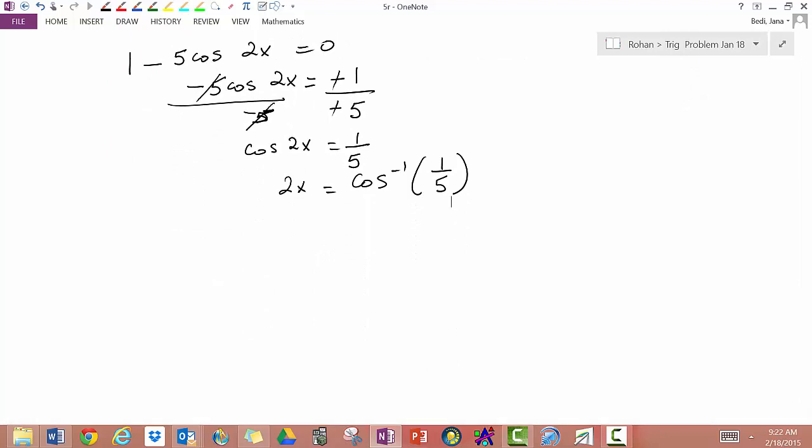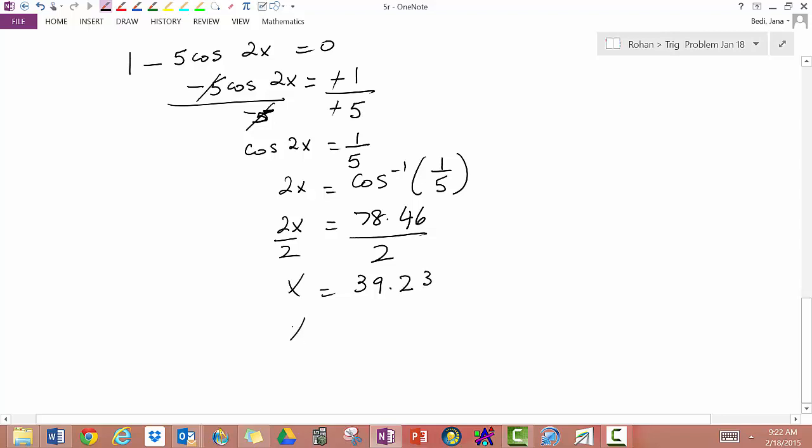Let me move this down a bit. And check on my calculator. We get cosine inverse of 1 divided by 5. That gives me 2x is equal to 78.46 divide by 2, divide by 2, and I get x equals 39.23. Since they asked for the answer in 1 decimal place, x equals 39.2 degrees.